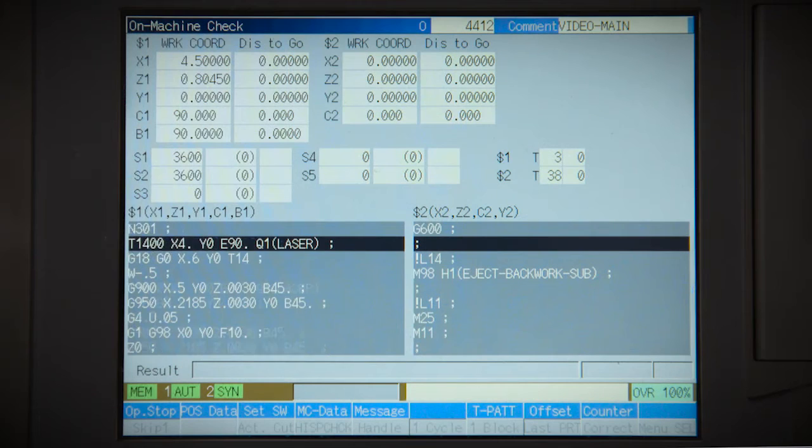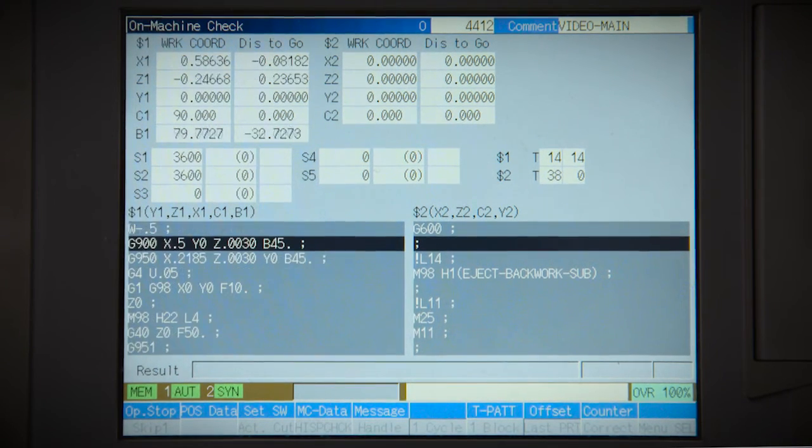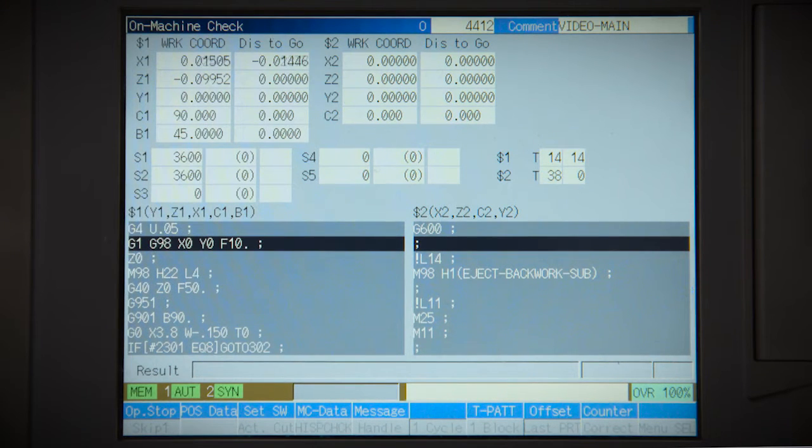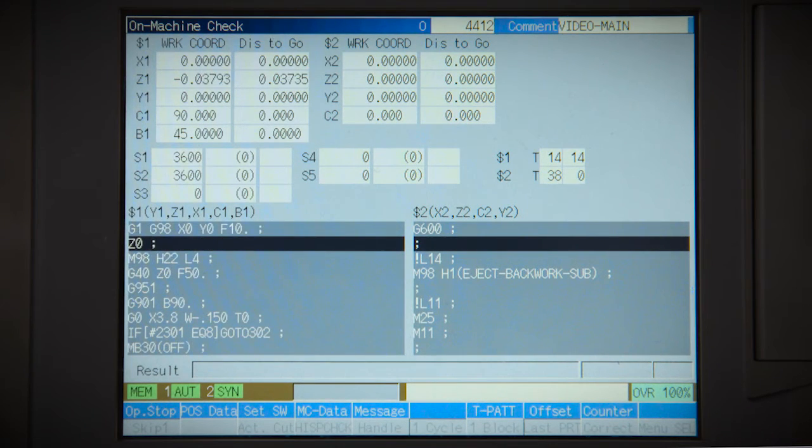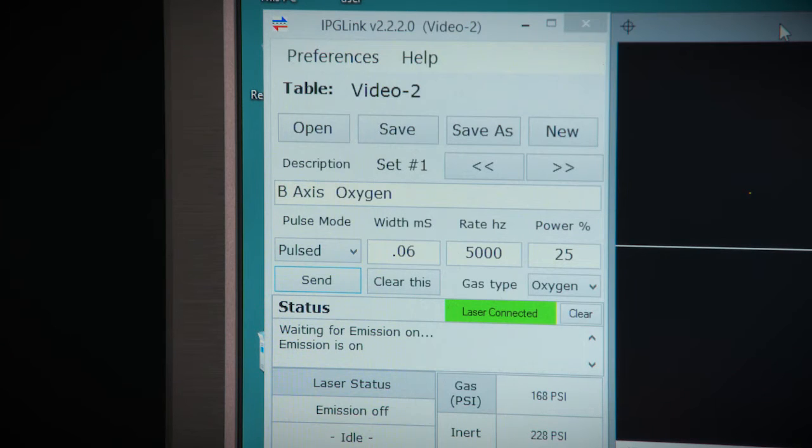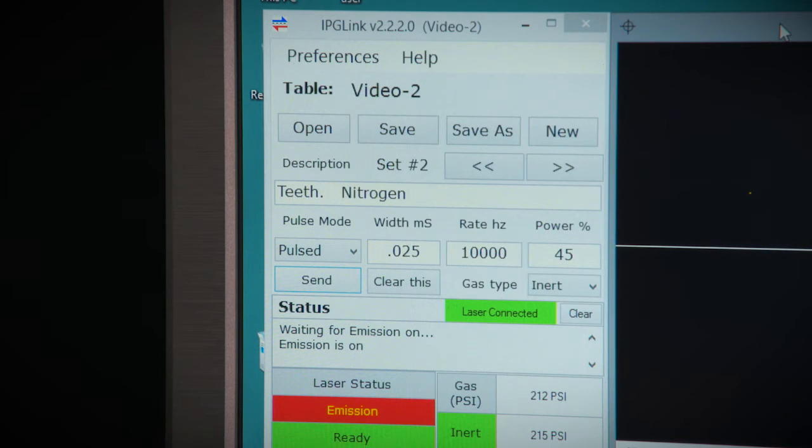The L2000 is completely interfaced to the Syncom control. Cutting path and offsets are fully controlled and edited in the machine control. Laser power and gas type can be selected from the part program.